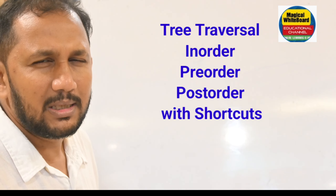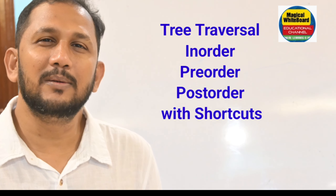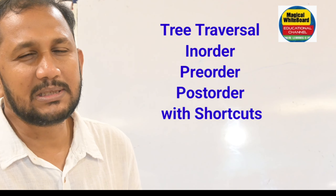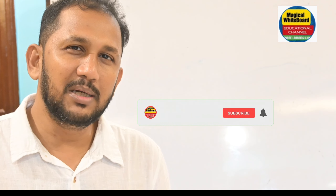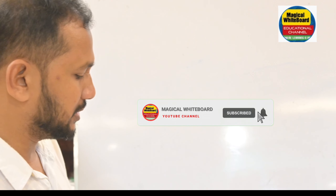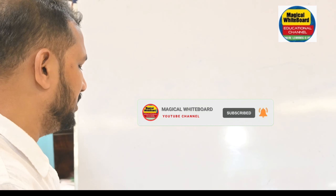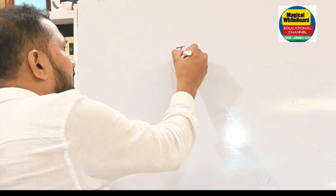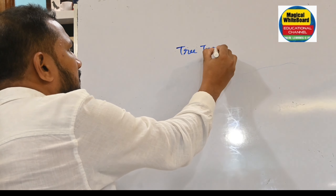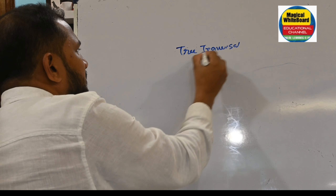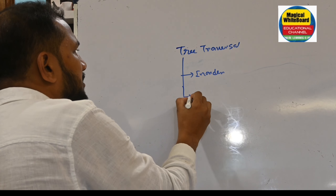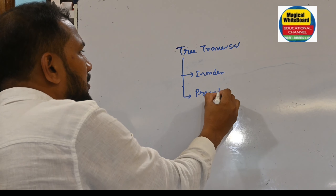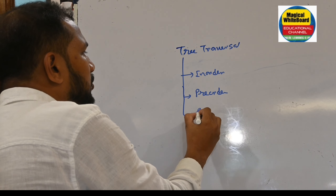Traversal means visiting each node exactly once. There are different methods through which you can traverse a binary tree. The traversals of a tree are three types: the first one is in-order, the second one is pre-order, and the third one is post-order.